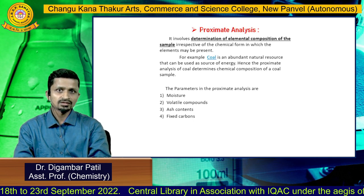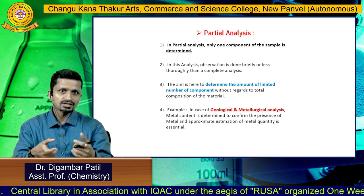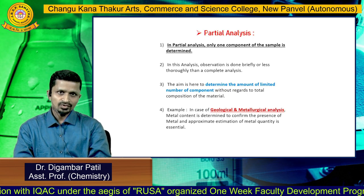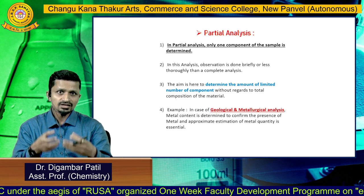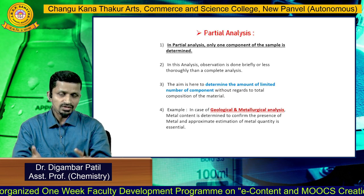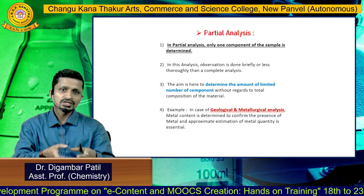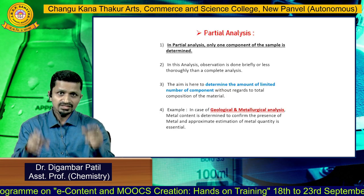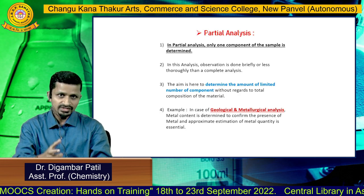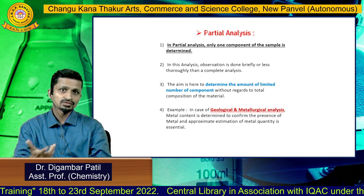The next type is partial analysis. As the name suggests, it involves the determination of only one or a limited number of components of the sample. For example, in geological or metallurgical analysis, you determine the percentage of metal present in the sample — studying only one required component. Any analysis where you determine a limited number of components is called partial analysis.